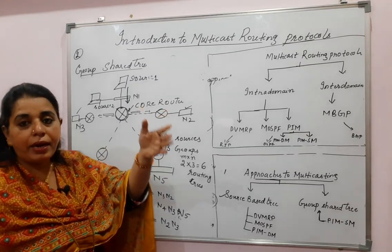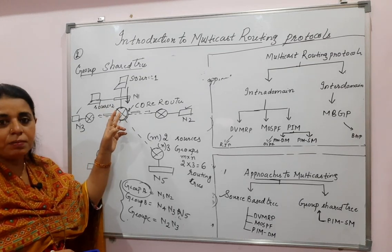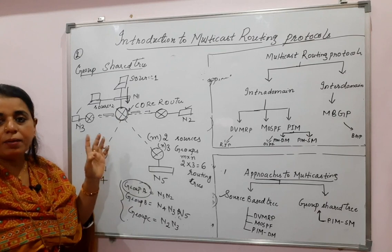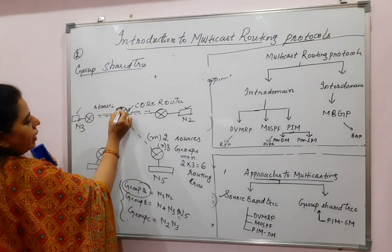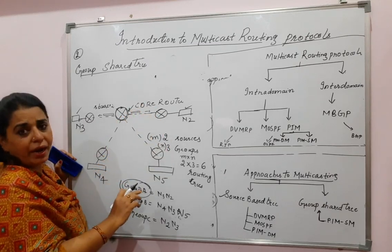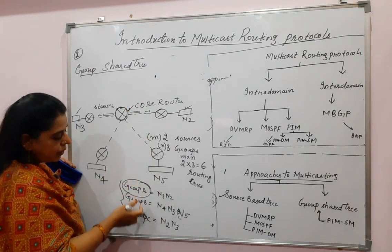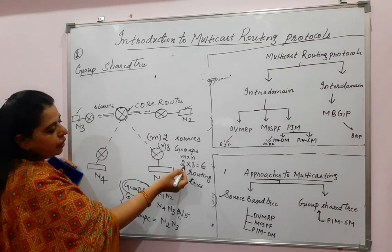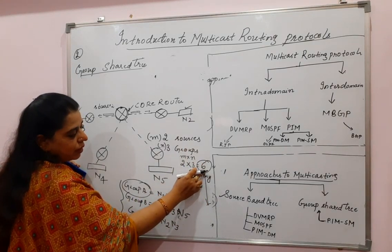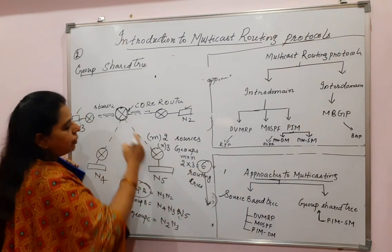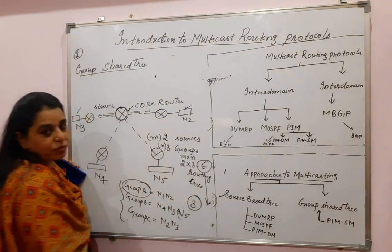In the routing tree of the source-based approach you had source-to-group combinations, but here you exclude the source. The source sends its multicast packet to the core router, and the core router forwards it to the different groups. So the routing tree starts only from the core router. With one core router and three groups, the core router maintains only three routing trees — reduced from six.